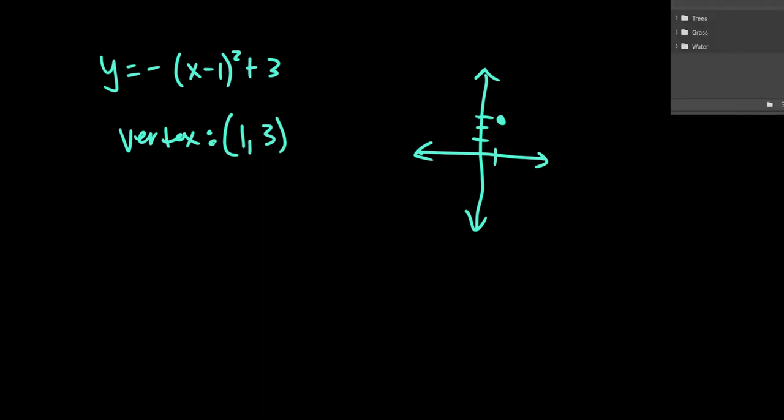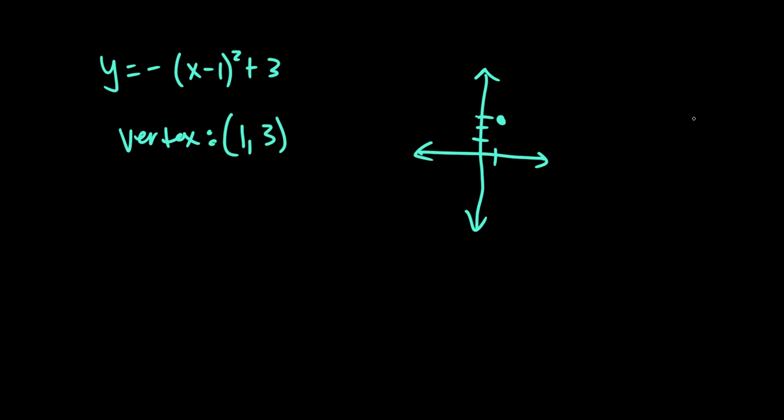Since there's a negative out in front, we know it's gonna be an upside down parabola. But I'm just gonna plug in a 0 for x, so -(0-1)² + 3. So 0 minus 1 is negative 1, negative 1 squared is positive 1, positive 1 made negative is negative 1, and then negative 1 plus 3 is 2.